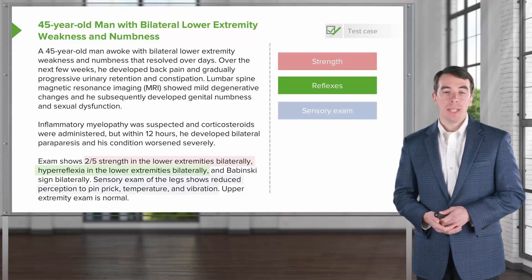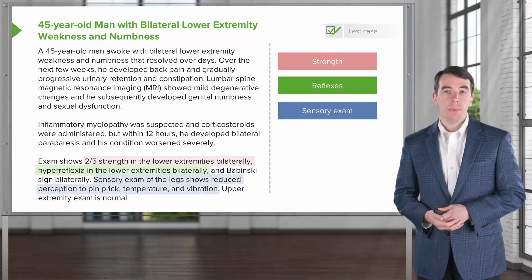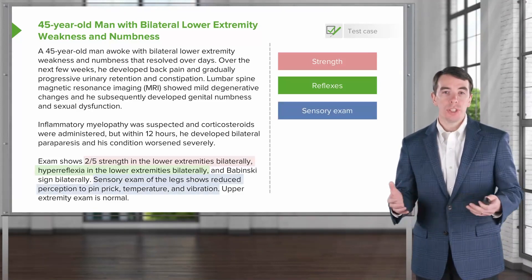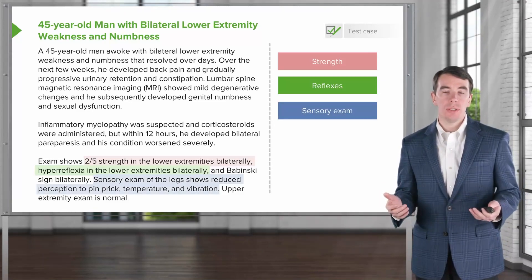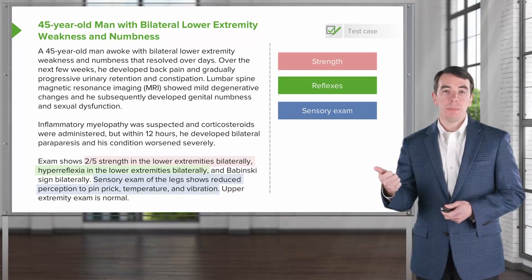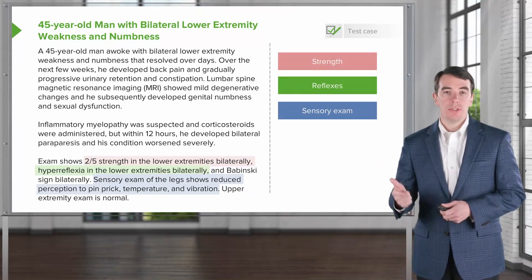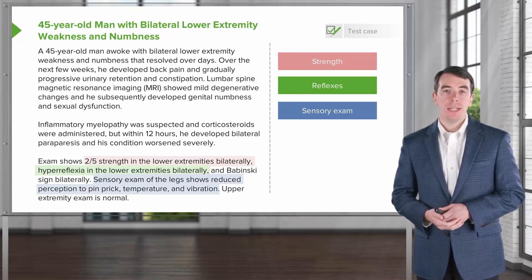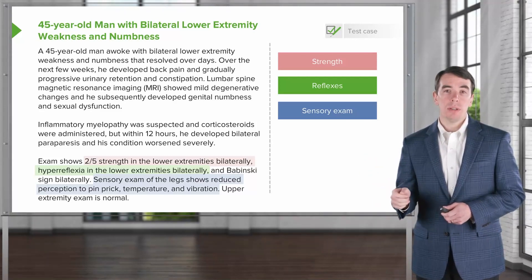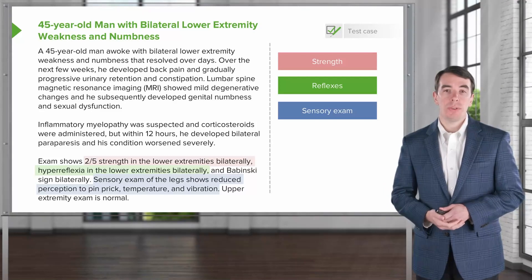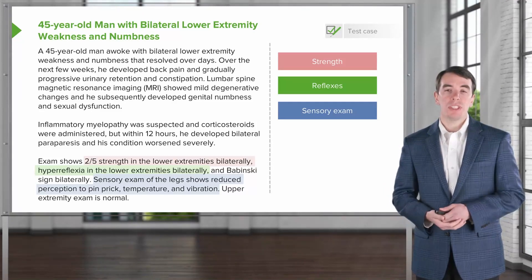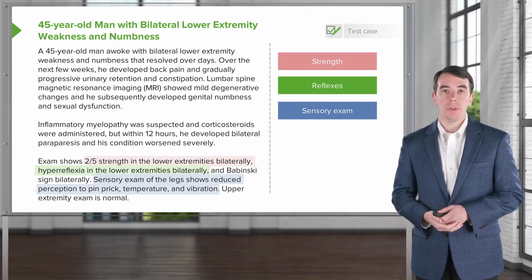The third key feature is the sensory exam. We have diffuse sensory dysfunction to pain and temperature with pinprick and temperature reduction, as well as vibration and proprioception with reduced vibration in the bilateral legs. We'd really want to interrogate whether there's a sensory level in this patient, which would also be supportive of a spinal cord disorder.